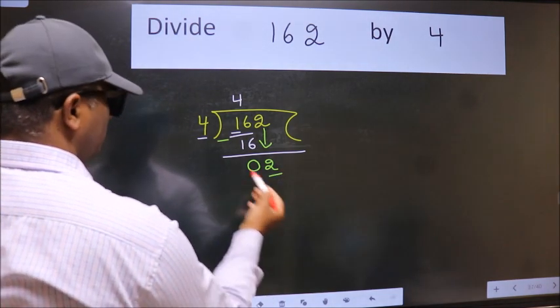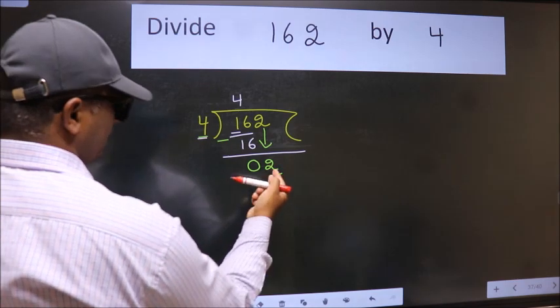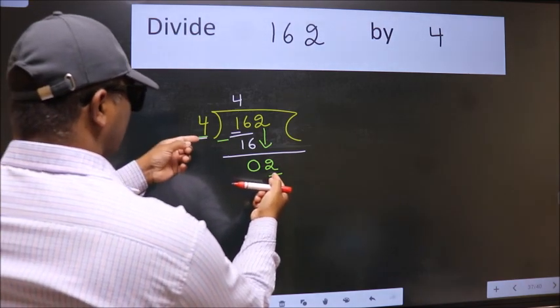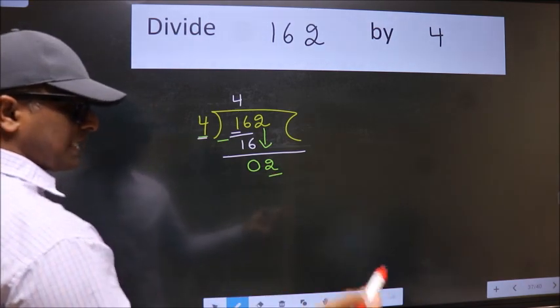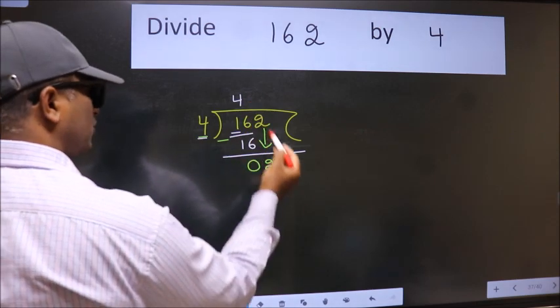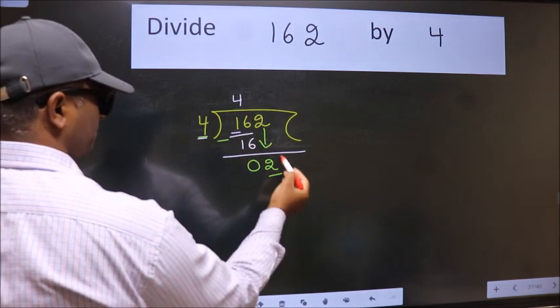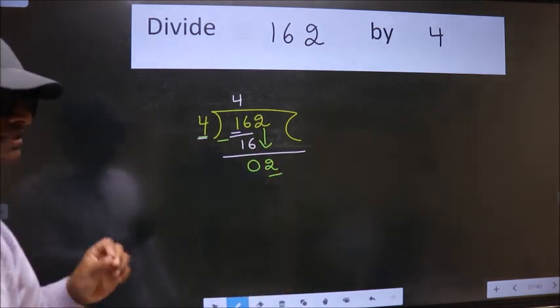Here we have 2 and here 4. 2 is smaller than 4. So what many do is they directly put dot, take 0, which is wrong.